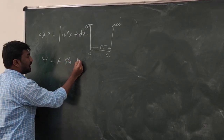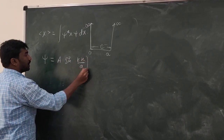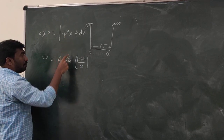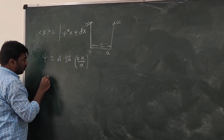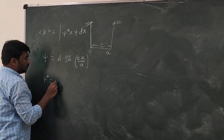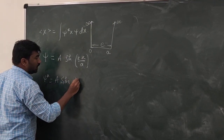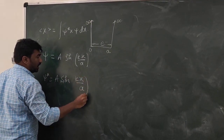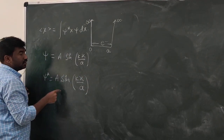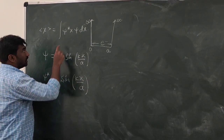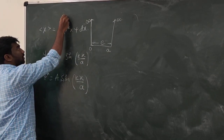The expectation value of x can be written as the integral of ψ* x ψ dx. Here ψ is the wave function of this electron when the electron is bound in a one dimensional box. ψ is equal to A sin(kx/a), and ψ* is the complex conjugate, which is also A sin(kx/a) since there is no imaginary part. The box limits are 0 to a.